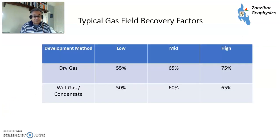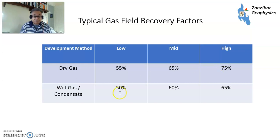Typical gas recovery factors are a lot higher because gas has much higher relative permeability than liquids. For dry gas: low case about 50-55%, mid case about 65%, high case about 75-80%, and the very best maybe up to 85%. For wet gas condensate, there's a danger of condensate banking if the condensate drops out in the reservoir: 50% low case, 60% mid case, 65-70% high case.